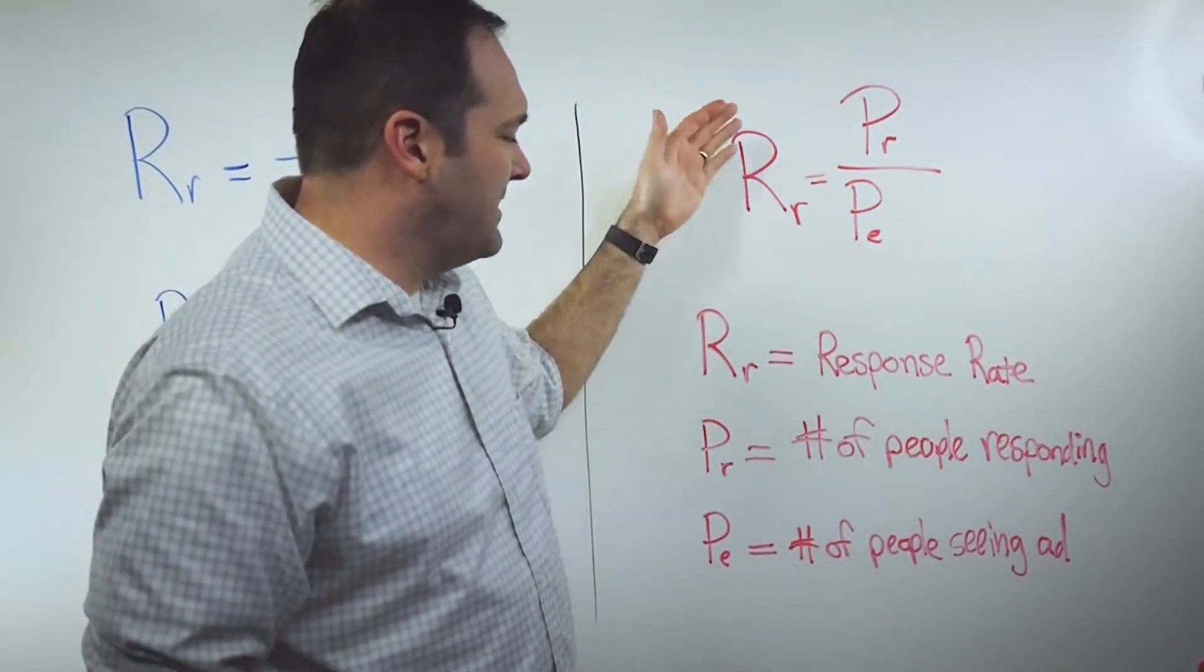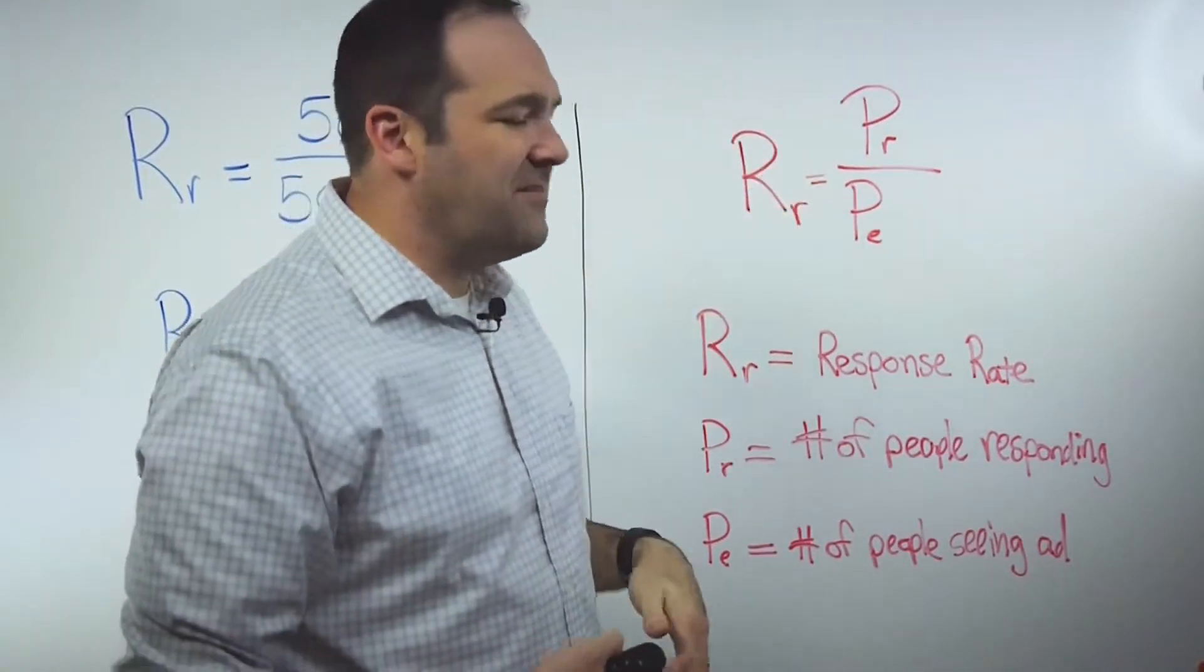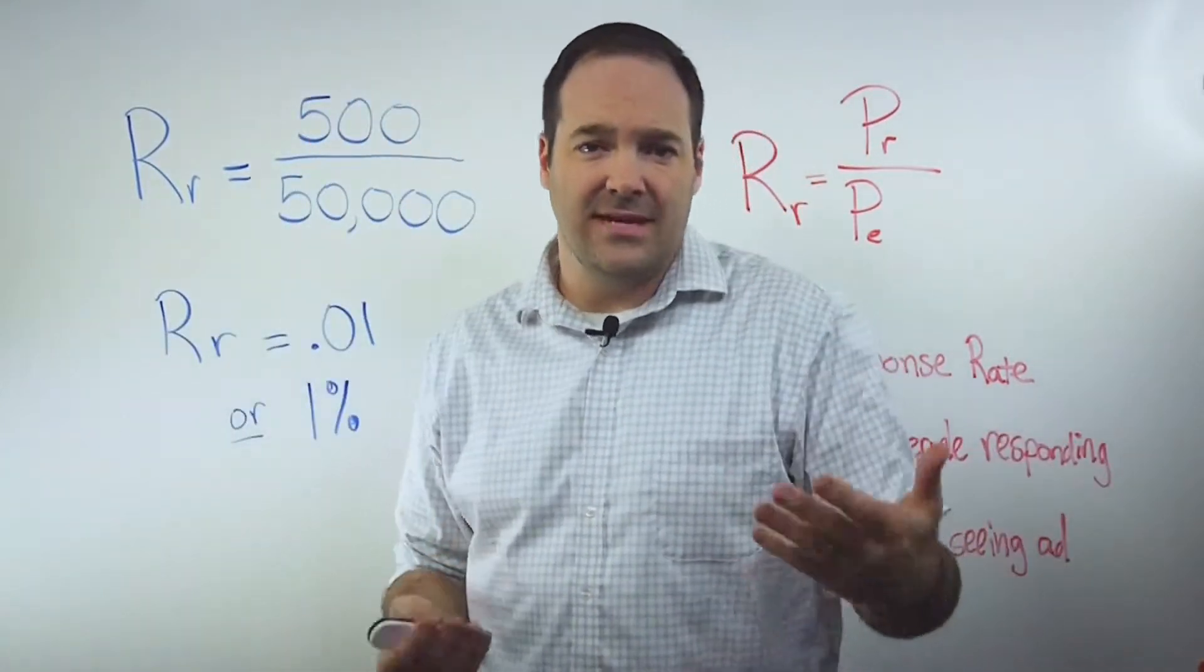Basically, you get your response rate by taking the number of people who responded to your ad over the amount of people that saw the ad, the total amount you sent it to.